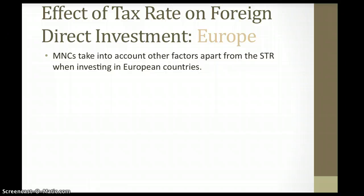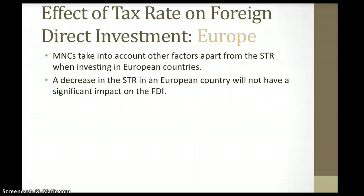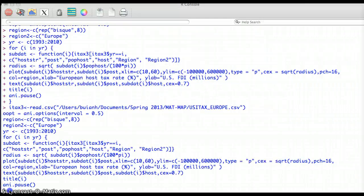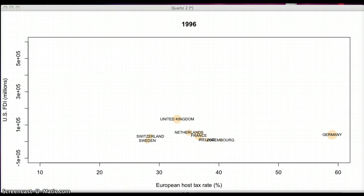Now we go into detail of the effect of tax rate on foreign direct investment for European host countries. MNCs take into account other factors apart from the tax rate when investing in European countries. A decrease in the STR in a European country would not have a significant impact on the FDI. The movement of the bubble can be horizontal — a reduction in the tax rate with no change in FDI — or vertical, meaning no change in STR but an increase in FDI.